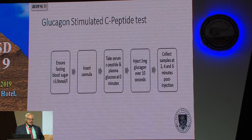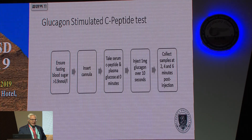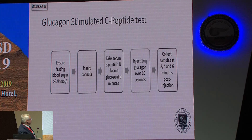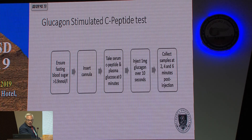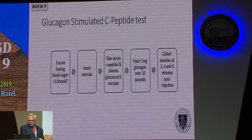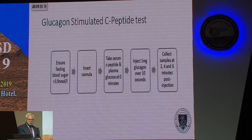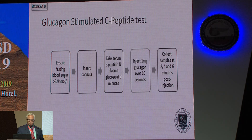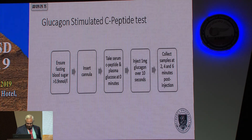If you want the recipe for a glucagon-stimulated C-peptide level: get a glucose reading, make sure it's not too low, insert a cannula, give glucagon over 10 seconds, then collect samples quickly — before you get beta cell suppression. That's the way you get that measurement.